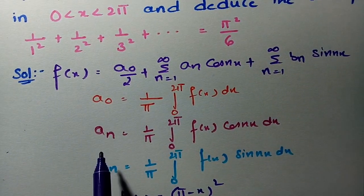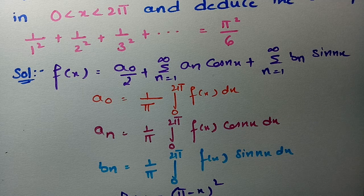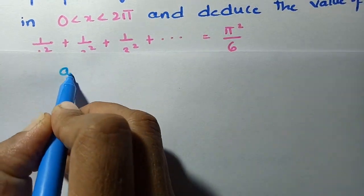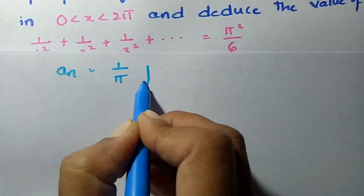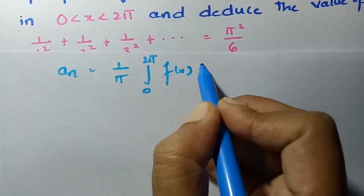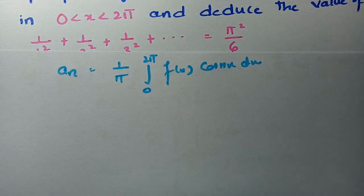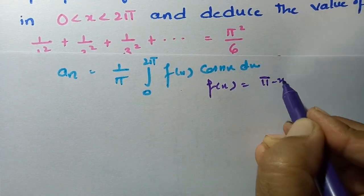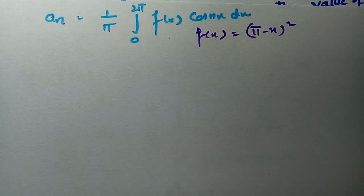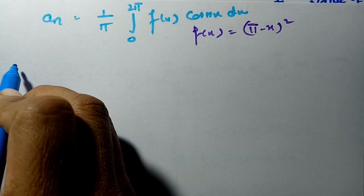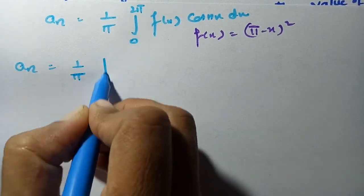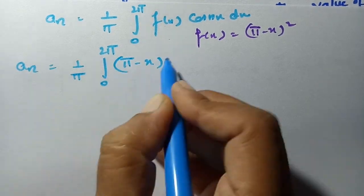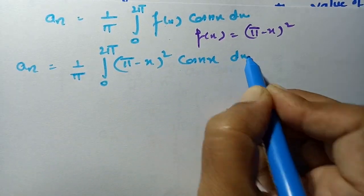We got a0 = 2π²/3. Next we find an. The formula for an is (1/π)·∫₀²π f(x)·cos(nx) dx. Here f(x) = (π - x)², so an = (1/π)·∫₀²π (π - x)²·cos(nx) dx.